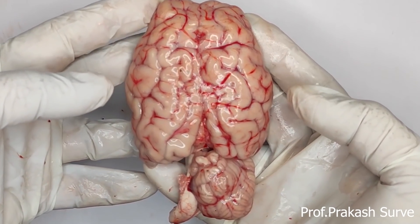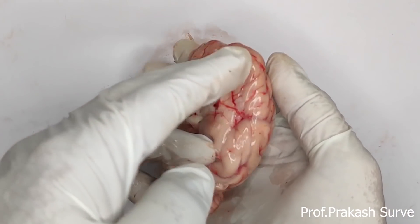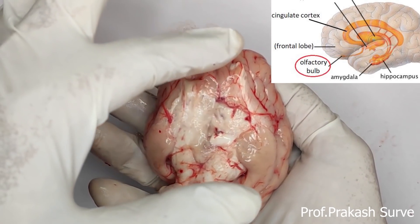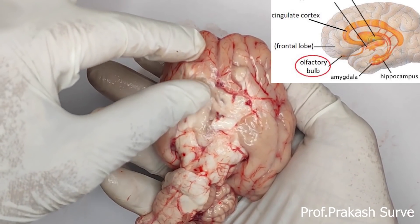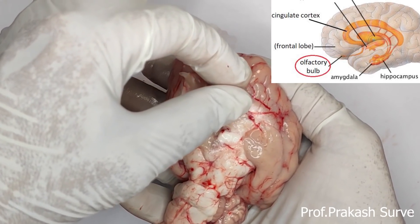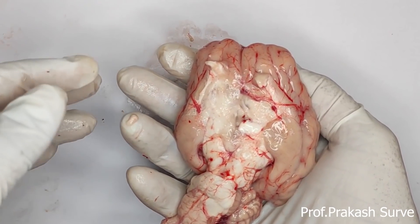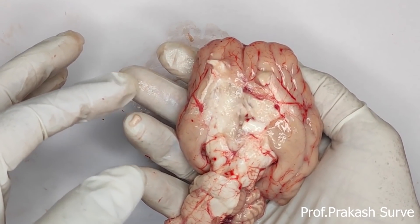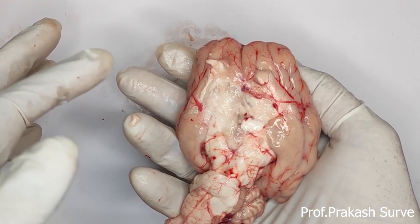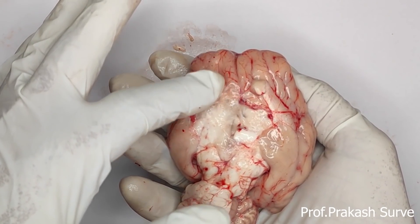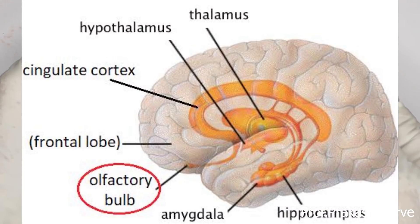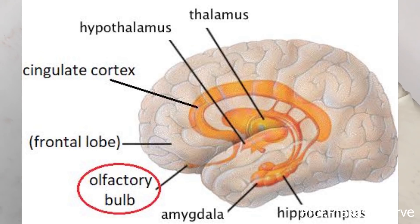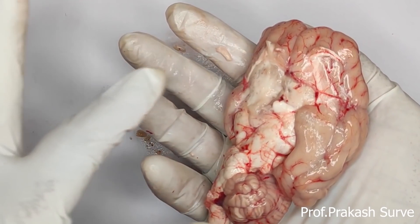In the case of the forebrain, the olfactory lobes are present, which are more developed and larger in the goat. This is because animals rely more on their sense of smell than humans do. In the case of human beings, the olfactory lobes are very less developed — they are highly reduced.